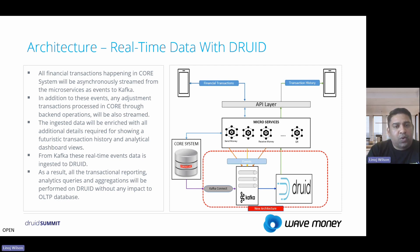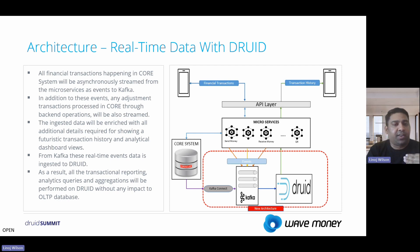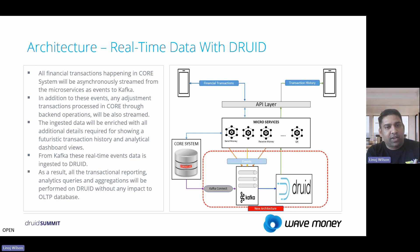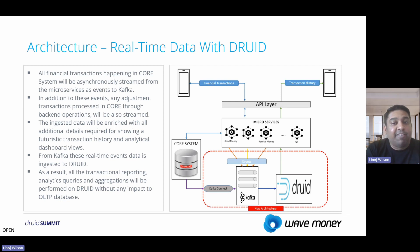Druid now contains all transactions — both app-layer transactions and backend operation transactions. Druid is enriched with all transactional data, which powers our new transaction history view. All aggregation and analytic queries are now performed on Druid instead of our OLTP core database, giving us high throughput performance and high-value queries.